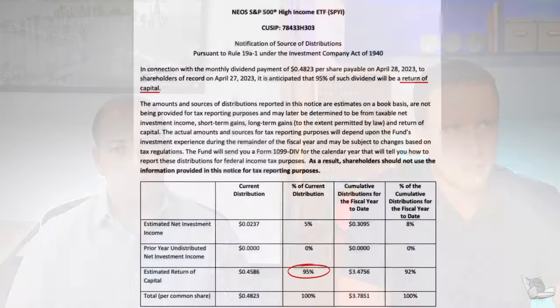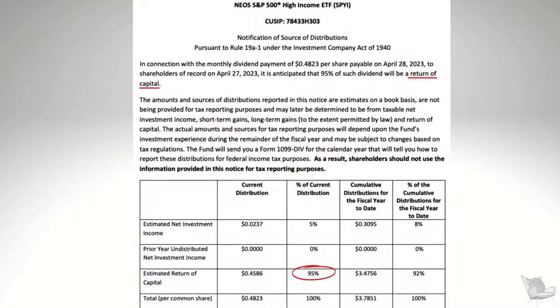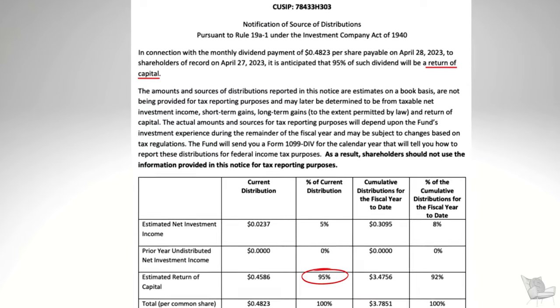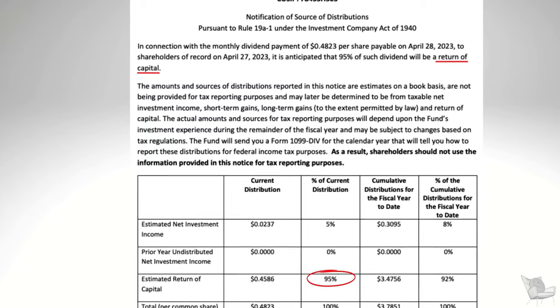People get these notices that say there's return of capital. These notices come at a fairly high percentage, and if someone's not familiar with return of capital, they may have some questions. So can you explain how you're returning capital to investors when you're actually not returning their capital?